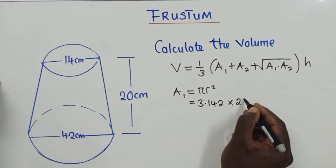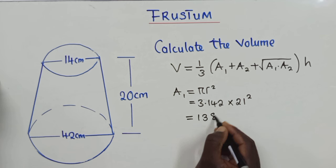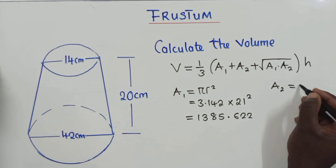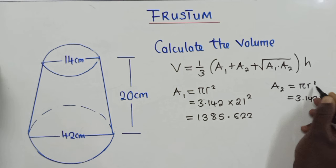So you just say pi r squared. So what is our pi here? 3.142 times our radius, which is 21 squared. So when you solve here, you're getting 1,385.622.